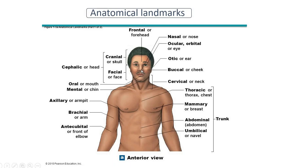The eyes are called ocular or orbital. The ears are called otic or acoustic. The buccal area is the cheek. The mouth is called oral. The chin is called mental. So the new words for the face are: cephalic, cranial, facial, frontal, nasal, ocular or orbital, otic, buccal, oral, and mental. Then you have cervical, which means the neck.